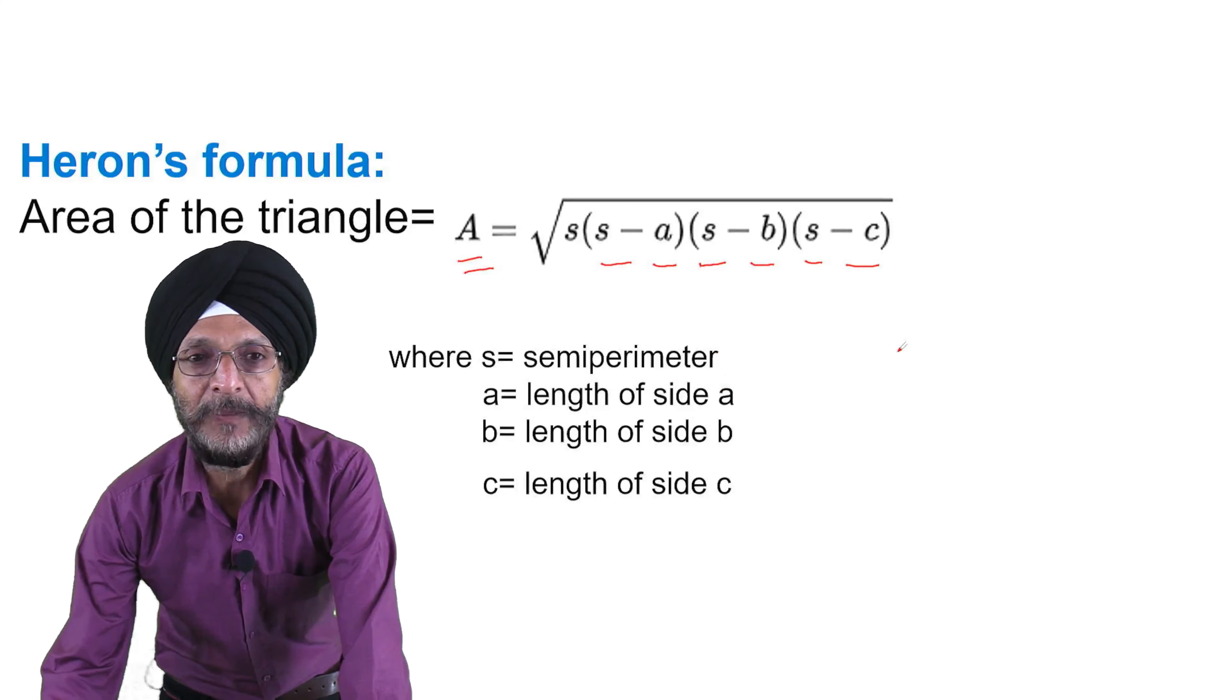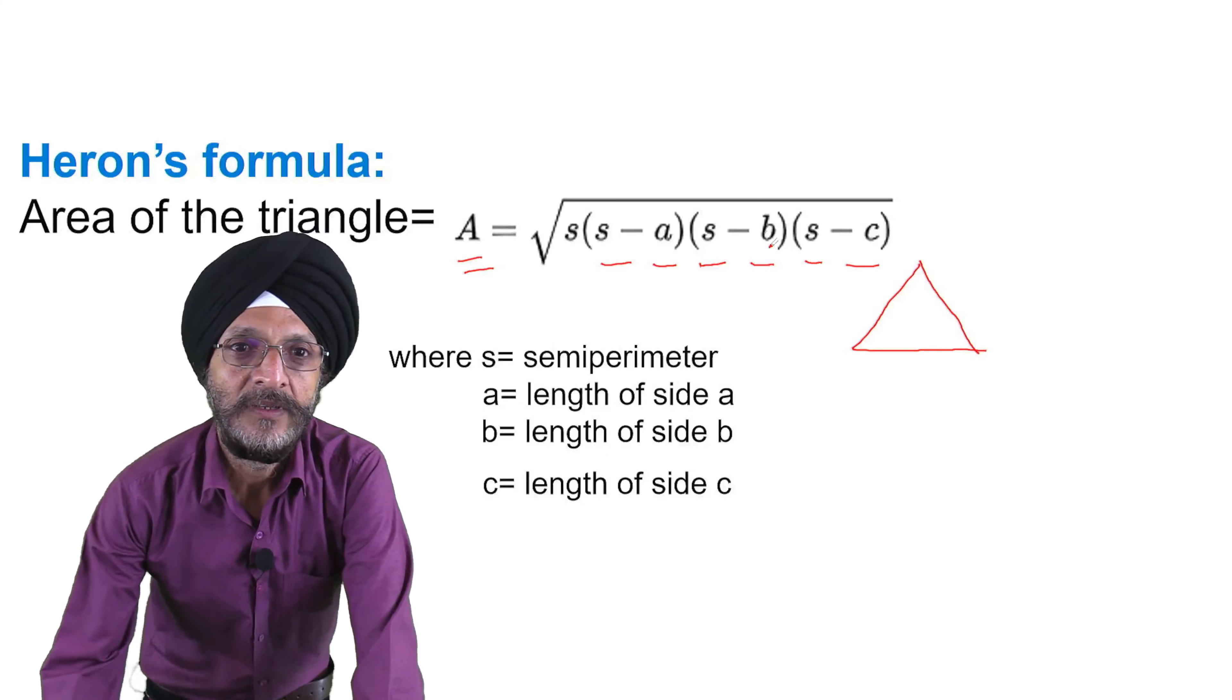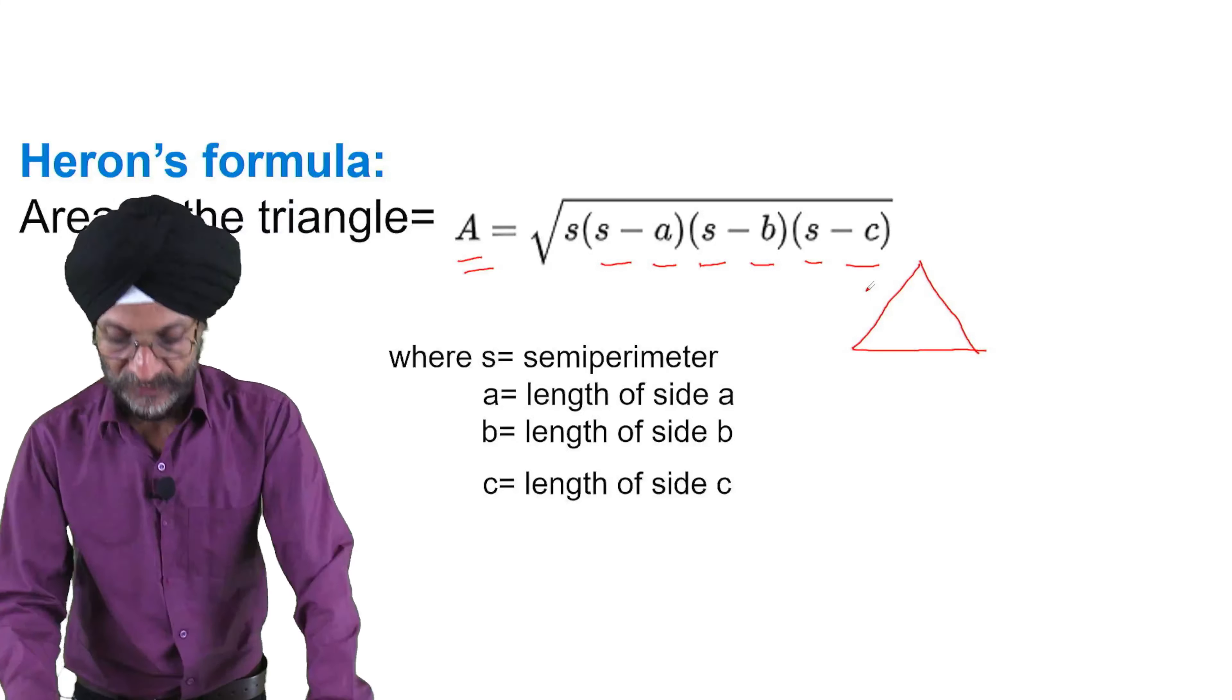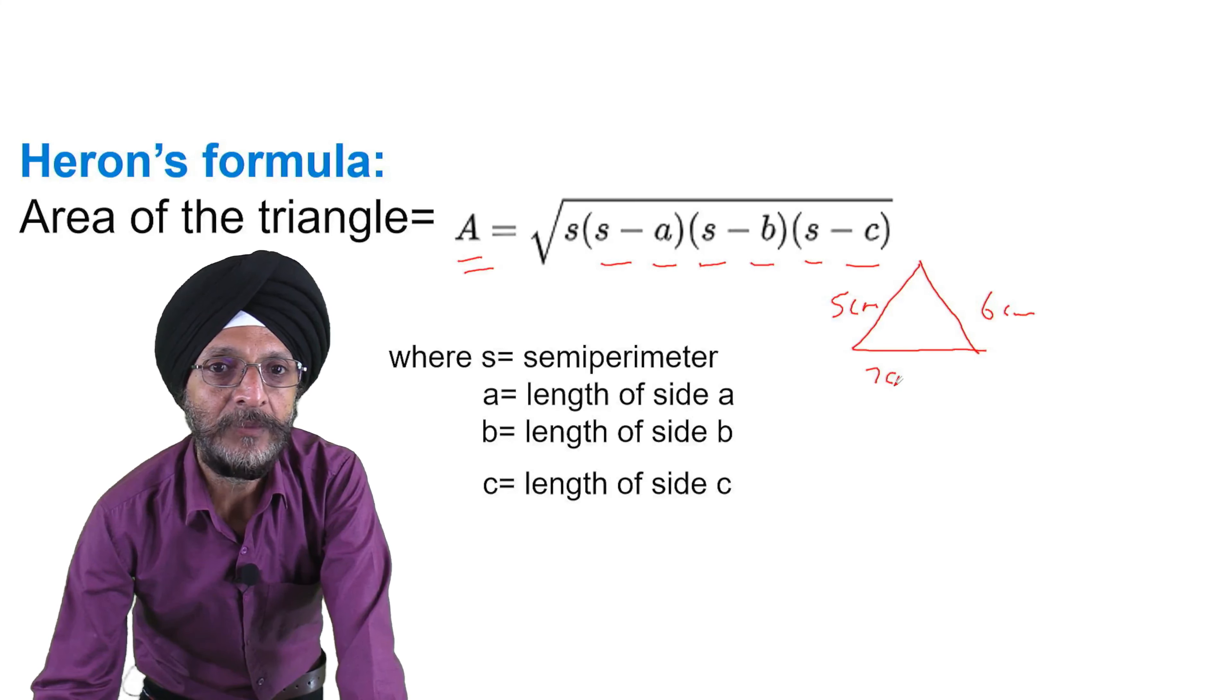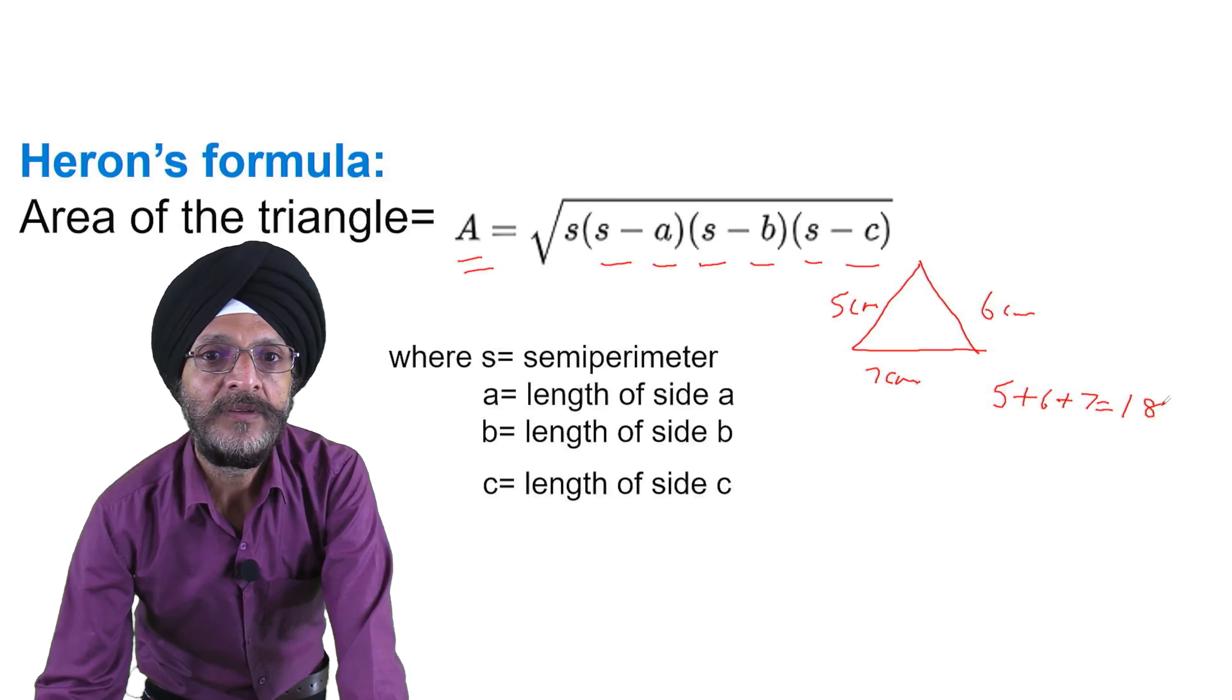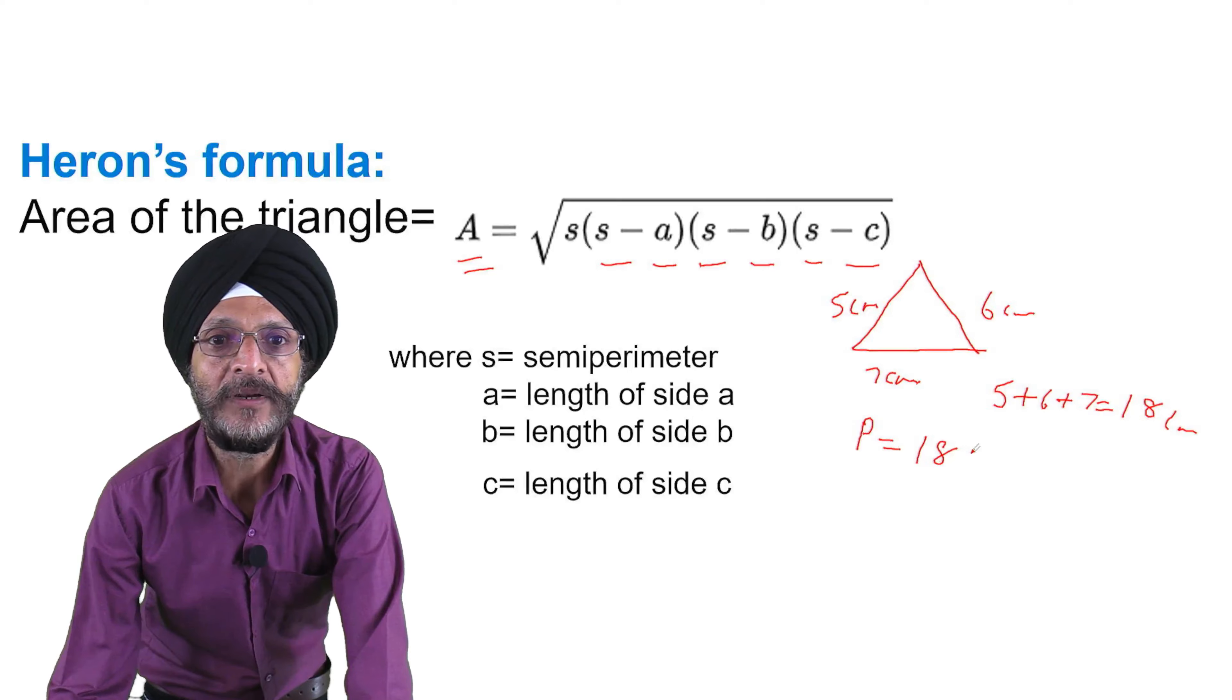Where S is semi-perimeter. What is semi-perimeter? If you go through the triangle, these are its three sides. If we total the length of all the three sides—suppose in this case, this is 5 centimeter, this is 6 centimeter, and this is 7 centimeter. If we total all the three sides, 5 plus 6 plus 7, it will become 18 centimeter. So the perimeter, that is the total of all the three sides, is called perimeter.